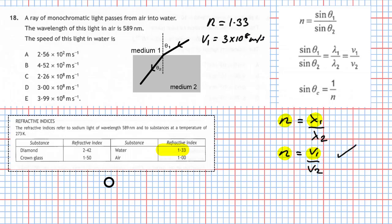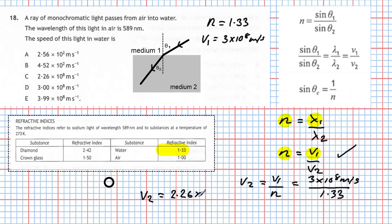Right away we can use this equation to work out the speed of light in the water, which is v2. Rearranging, v2 equals the speed of light in air divided by the refractive index. Putting in the numbers: 3 times 10 to the power 8 divided by 1.33, which is the refractive index from our data sheet. We get 2.26 times 10 to the power 8 meters per second — that gives us answer C.